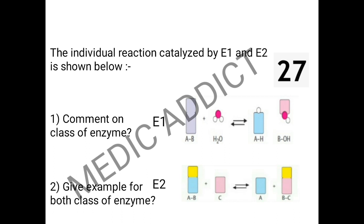Spot number 27 asks us to identify the enzyme class for E1 and E2. In the case of enzyme E1, the reactants are A-B and water, and the product is A-H plus B-OH. We can notice that it is a hydrolysis reaction because water splits into H⁺ and OH⁻, and A-B splits into A and B. A then reacts with H and B reacts with OH to form the products AH and BOH.